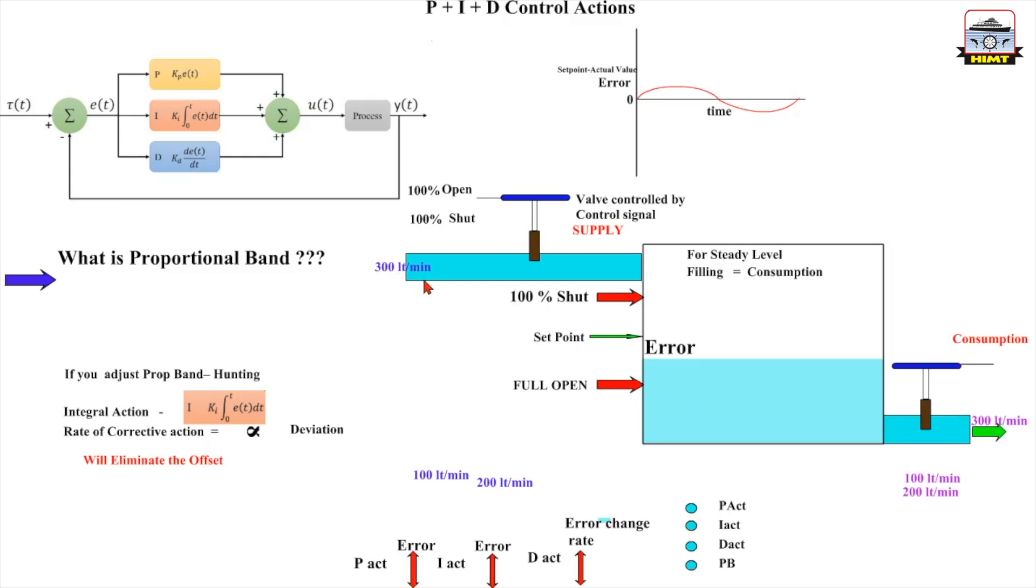So the valve will continue to open because the error is there. And if the valve continues to open more than what was required, that 300 liters per minute, the level will start rising up and it will remove the deviation. You see, this is the job of the integral action.